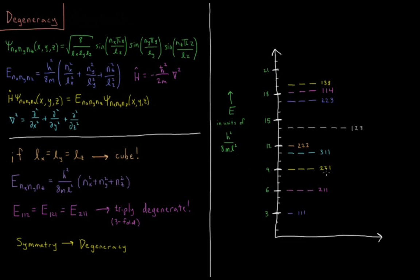Similarly, 2-2-1 is triply degenerate at 9. 3-1-1, 3 squared plus 1 squared plus 1 squared is 9 plus 1 plus 1 is 11. Triply degenerate at 11. 2-2-2 is singly degenerate at 12.